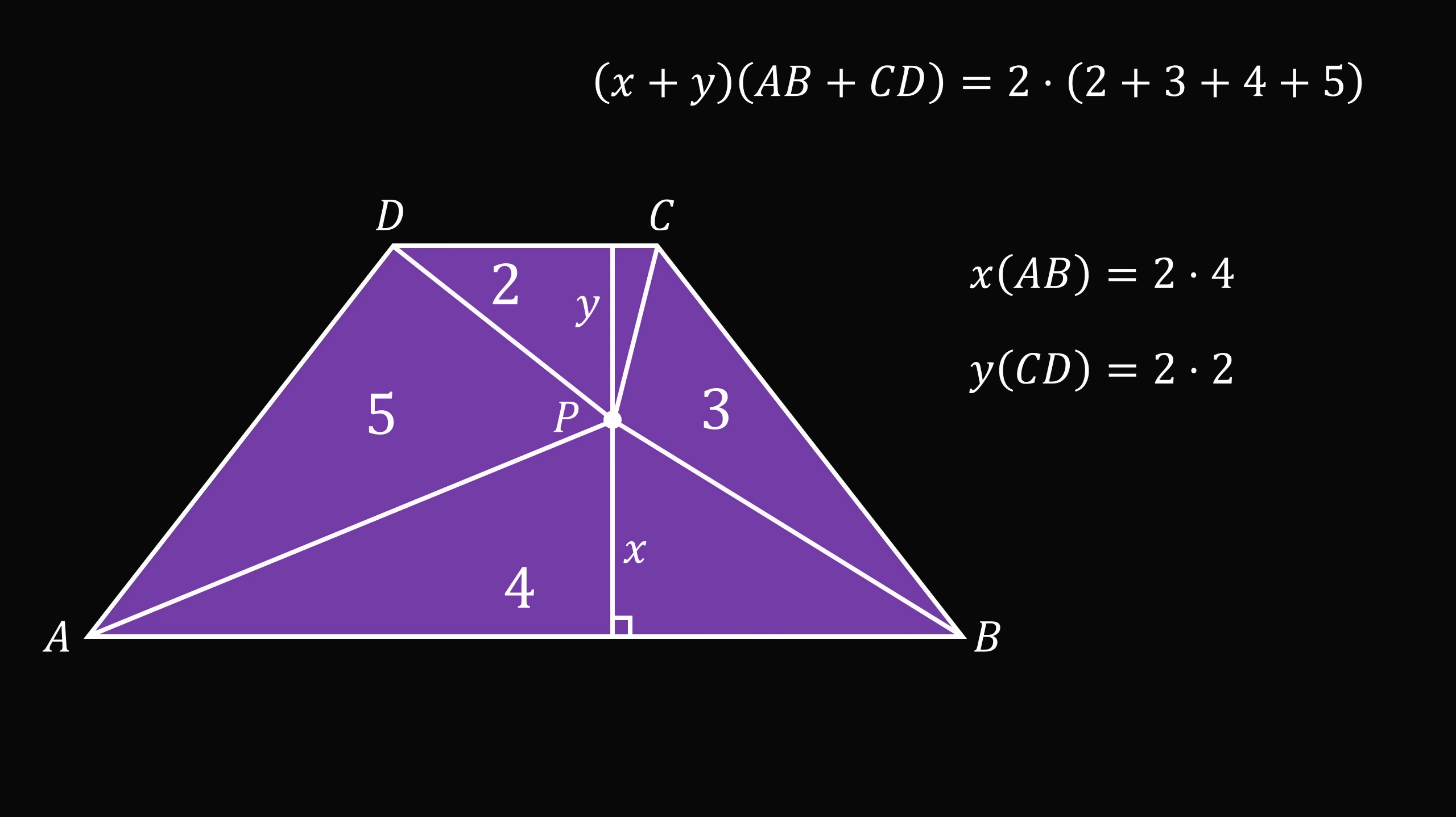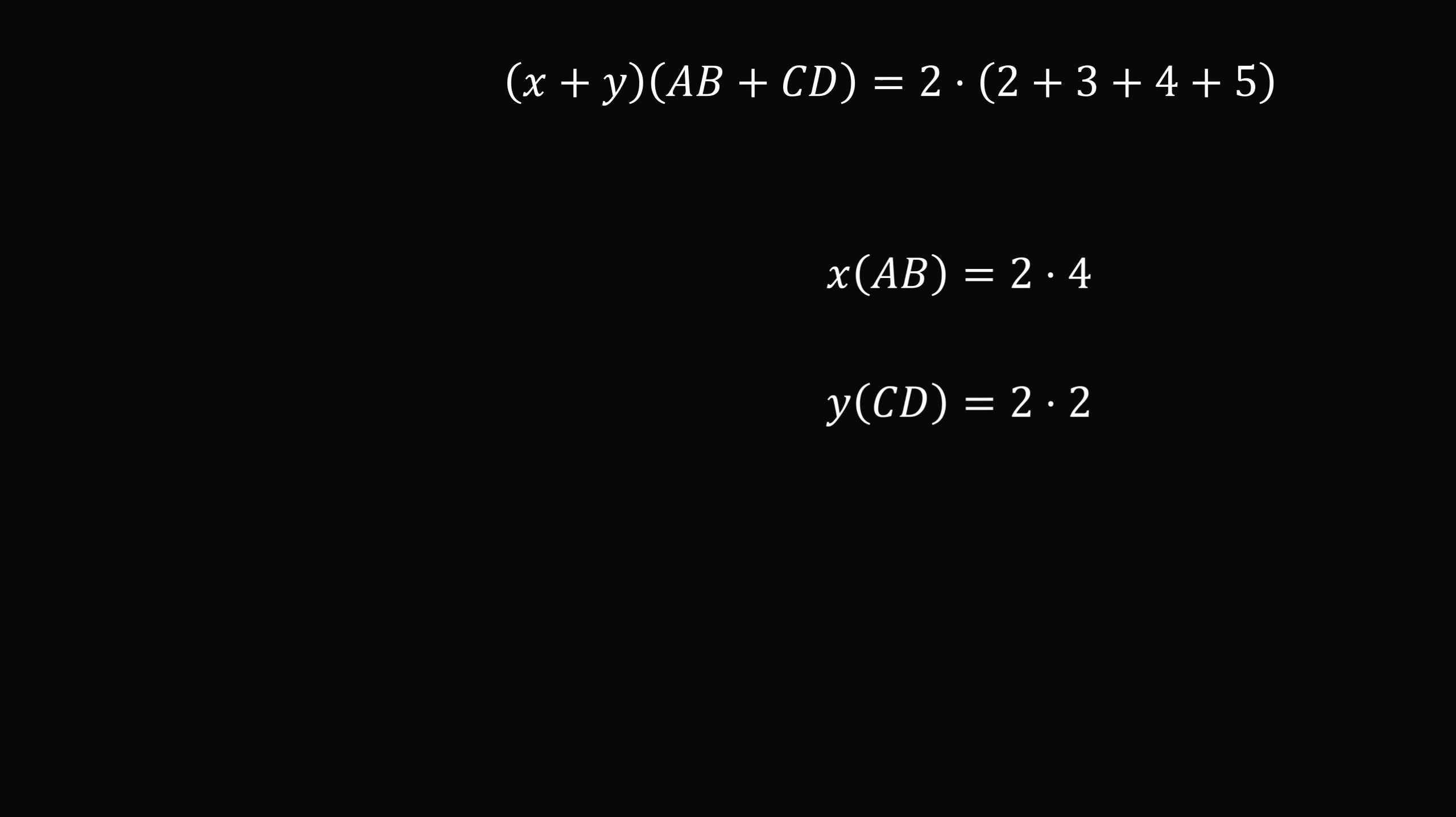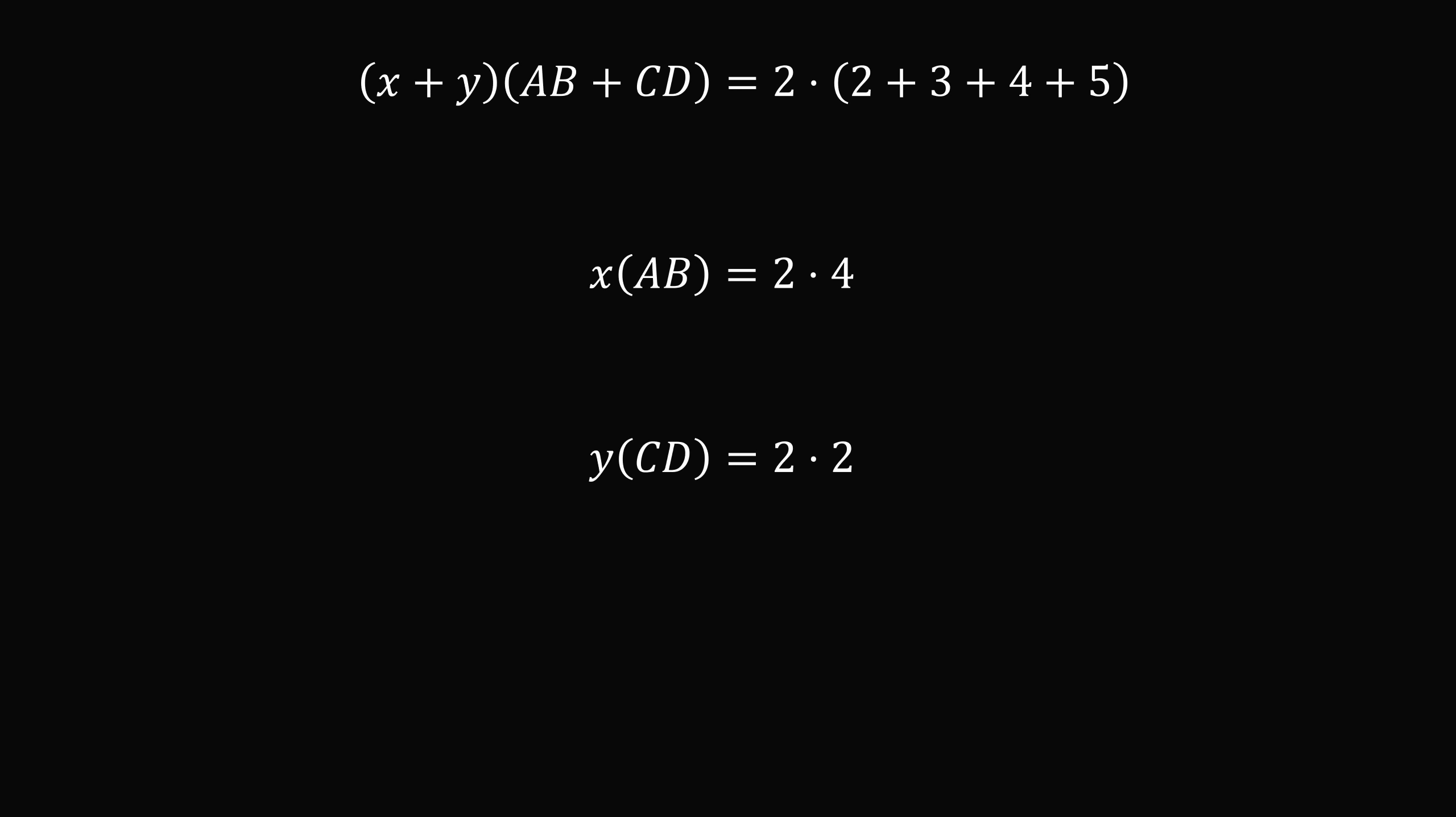We now have three equations. Let's focus on these three equations. First, 2 plus 3 plus 4 plus 5 is equal to 14. We'll then simplify the right-hand side of each equation.